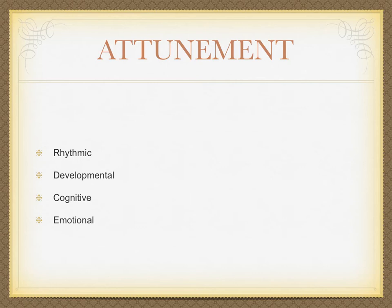Developmental attunement is thinking about what age this person is in front of you in terms of their development. For example, if they're going to be three, you're going to have to bear that in mind in terms of how you attune to the three-year-old, or the seven-year-old, or the teenage-year-old. That's really important, especially when we think of the parent-adult-child model of ego states.